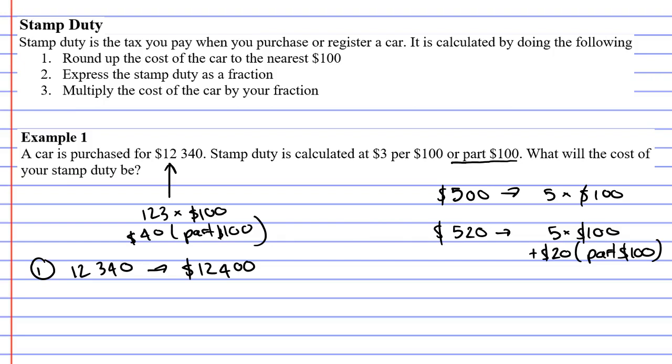Okay, step two says express the stamp duty as a fraction. What they mean by that is, see how it's $3 per $100? We're going to write that as 3 over 100, which is representative of $3 per $100.